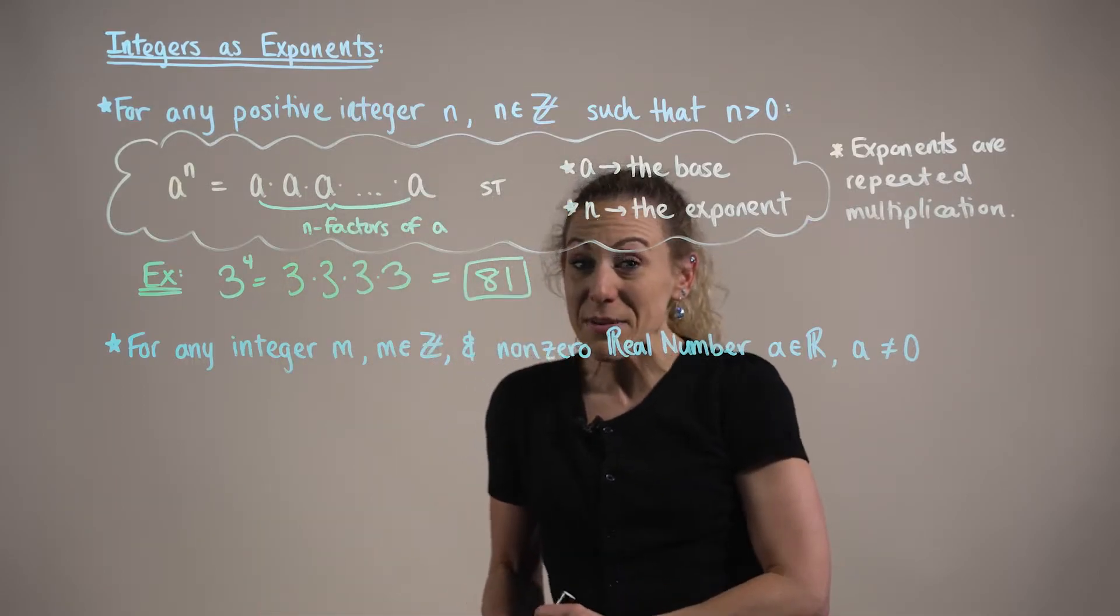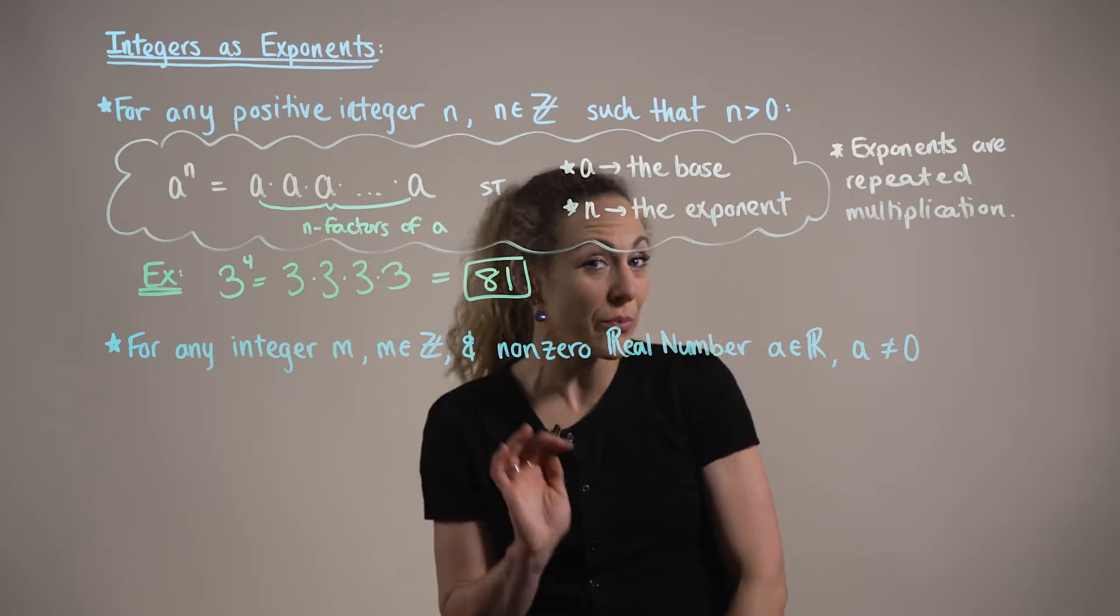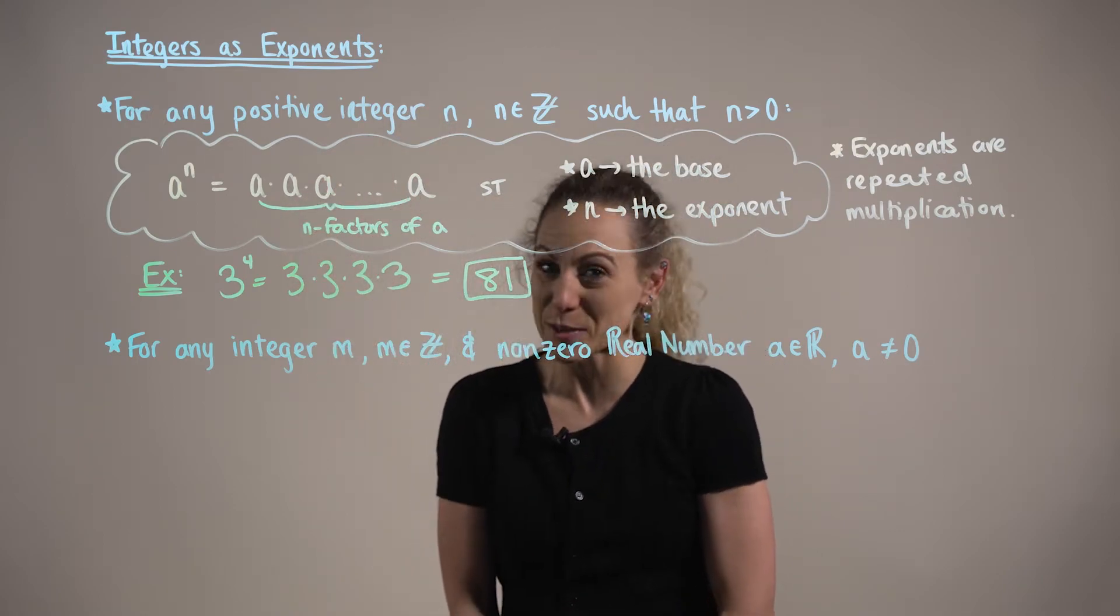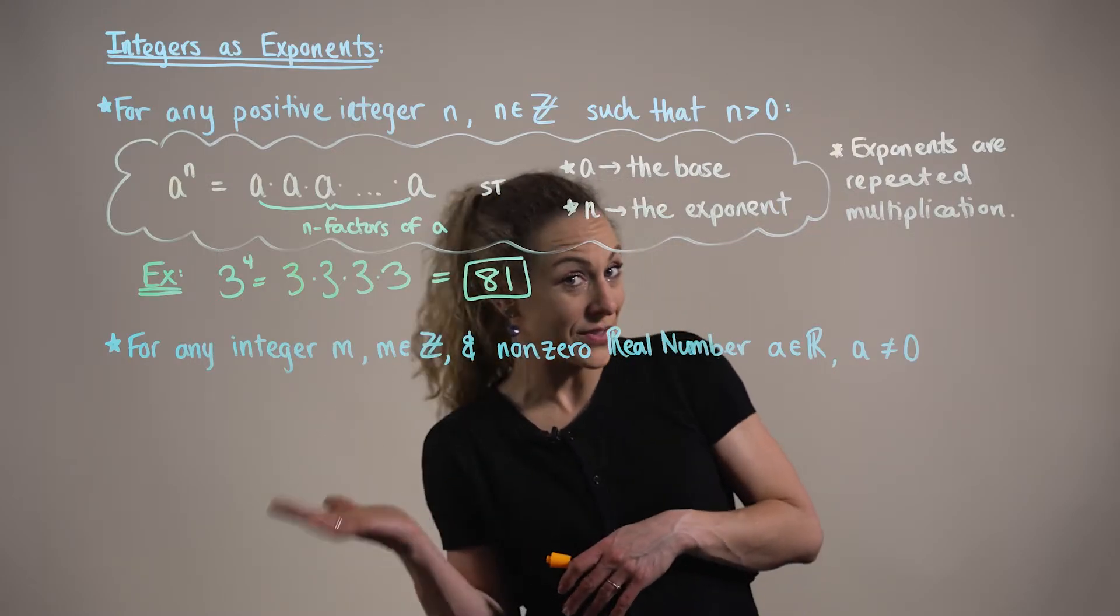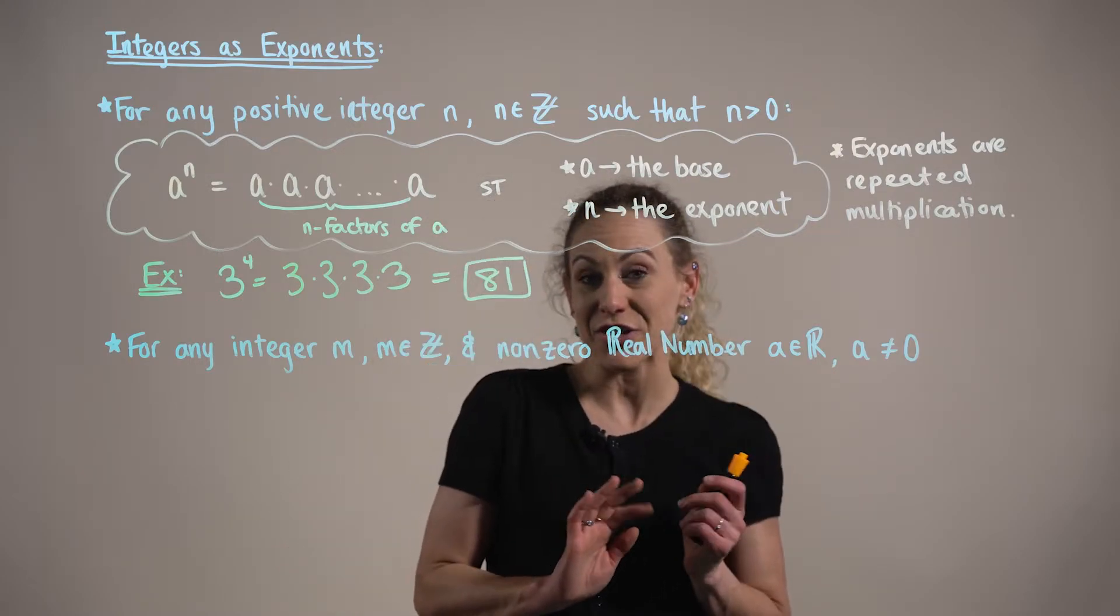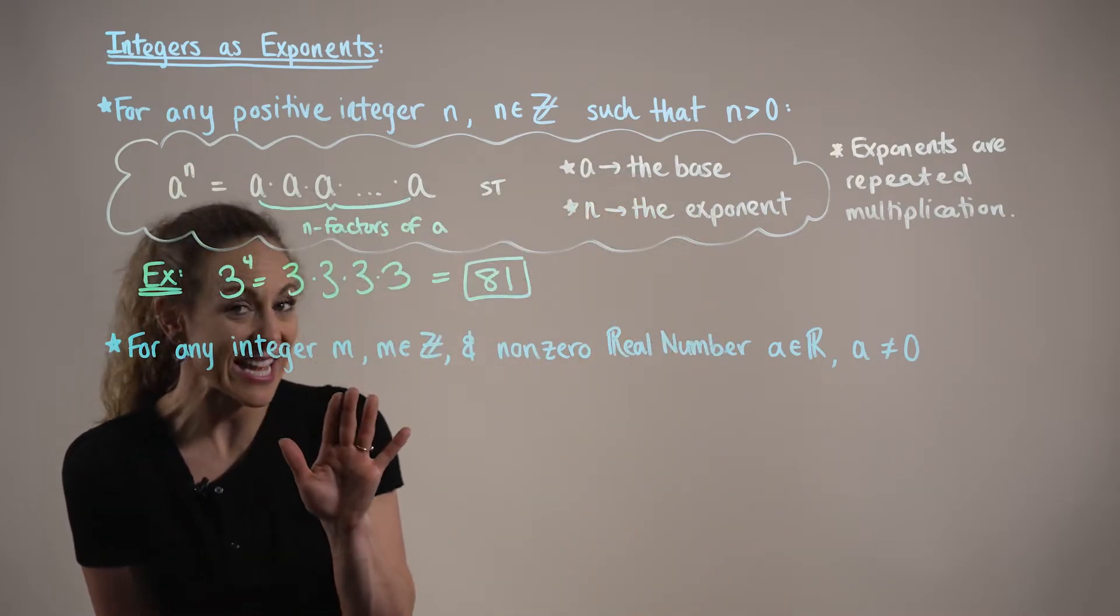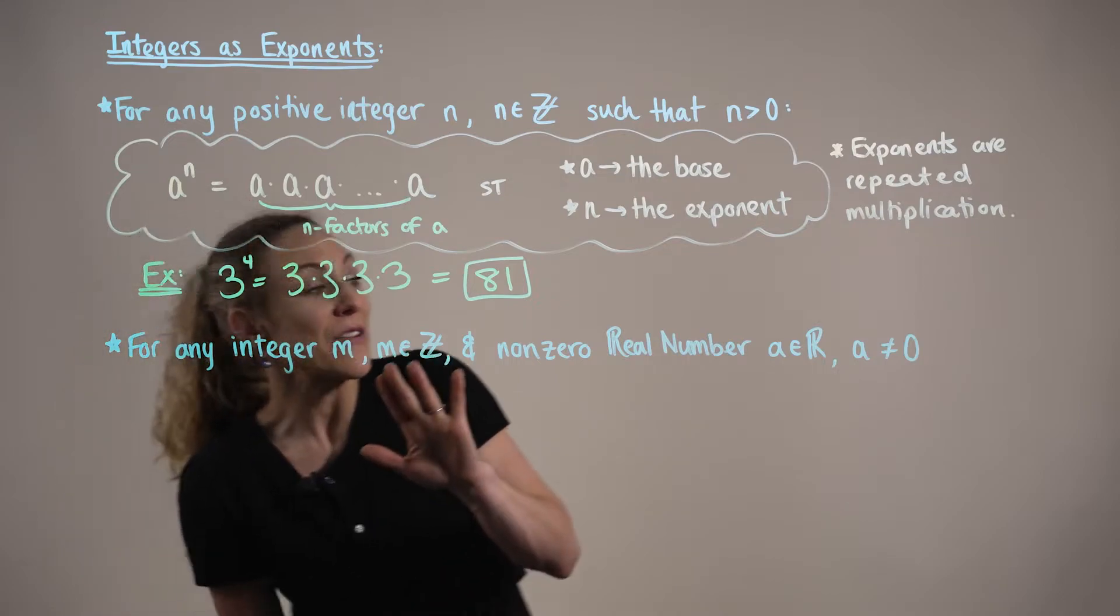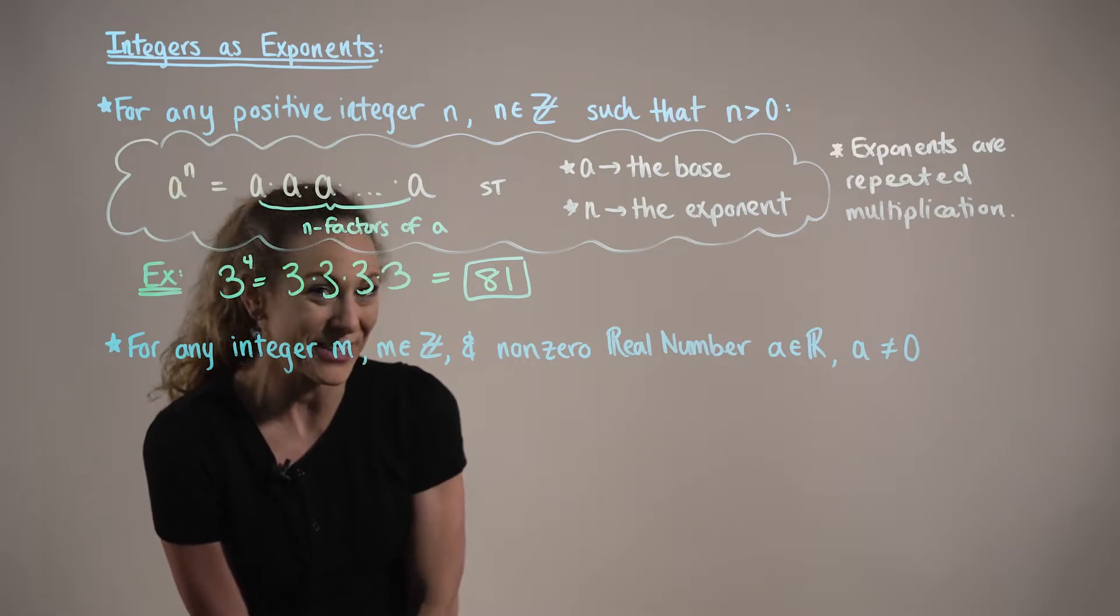We need to be mindful here. The above definition is when we're working solely with positive integers as exponents. When working with the integer zero or negative integers, we want to consider the following definition. For any integer m and for any non-zero real number a, we have the following definitions.